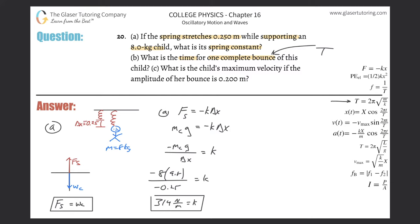The problem is asking for the period. The formula for simple harmonic motion gives: T = 2π times the square root of mass divided by spring constant. Plugging in: the mass is 8 kg. We don't know the spring's mass, so we assume it's negligible since we weren't told anything about it — that's a common assumption you learn through practice.